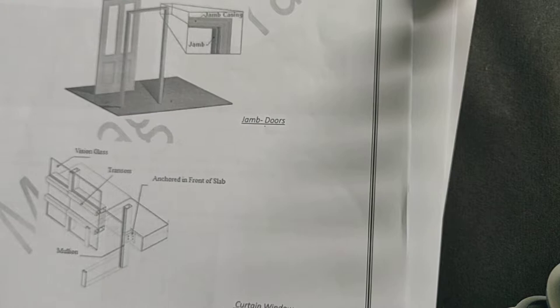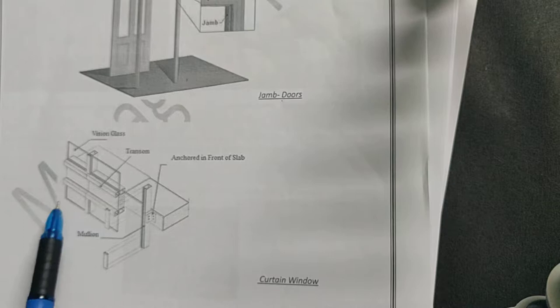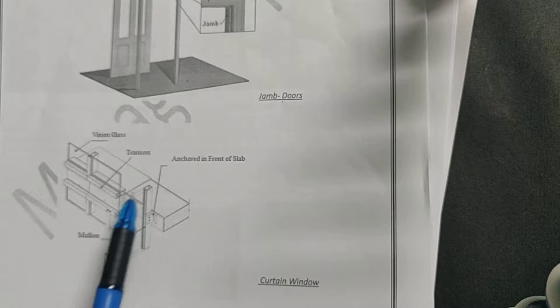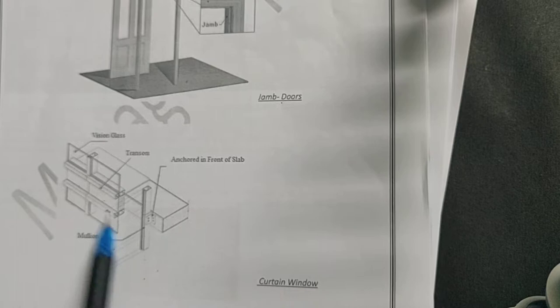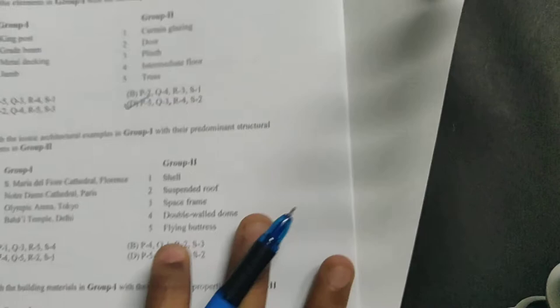For curtain window, I've taken curtain window because it's a very recent building component being used. This is a typical photo of a curtain window and its components. You have glass panels, horizontal transom, and vertical members known as mullions. The vertical members which hold the glass are known as mullions, and the horizontal sections are known as transoms.